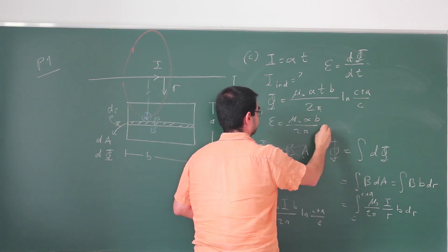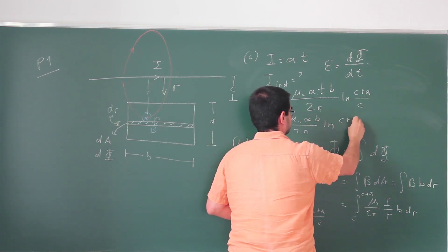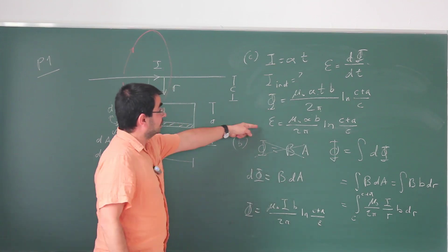So the EMF is going to be mu naught alpha B over 2 pi ln (c plus a) over c. They're asking not for the EMF but the current.